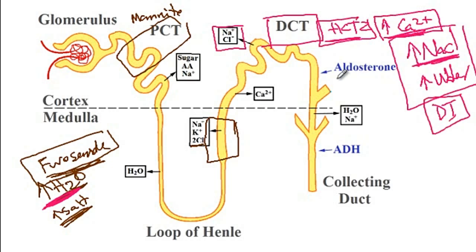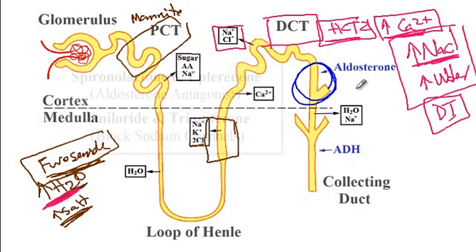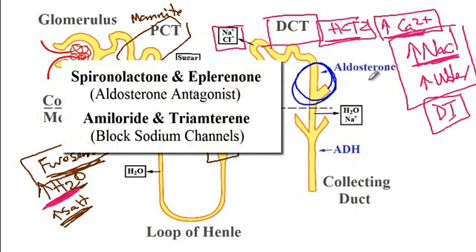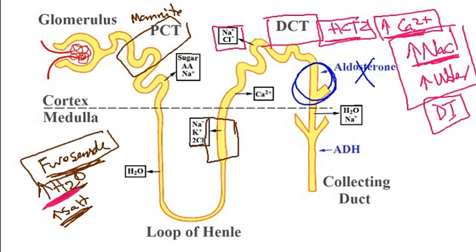The next class acts on the cortical portion of the collecting duct — these are called potassium-sparing diuretics. Examples include spironolactone and eplerenone, which inhibit aldosterone, and amiloride and triamterene, which block sodium channels. As the name implies, the side effect of these potassium-sparing diuretics is hyperkalemia.